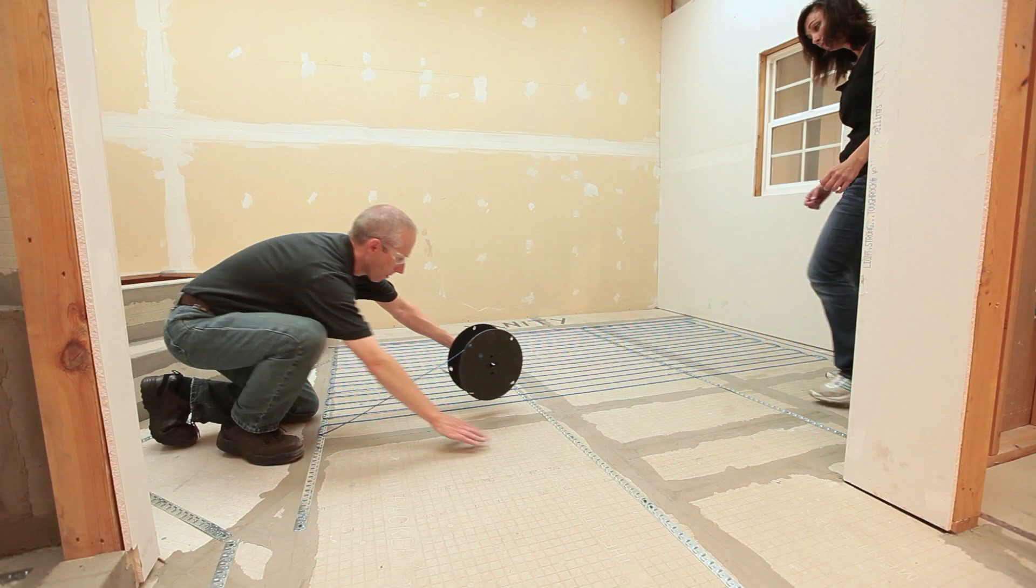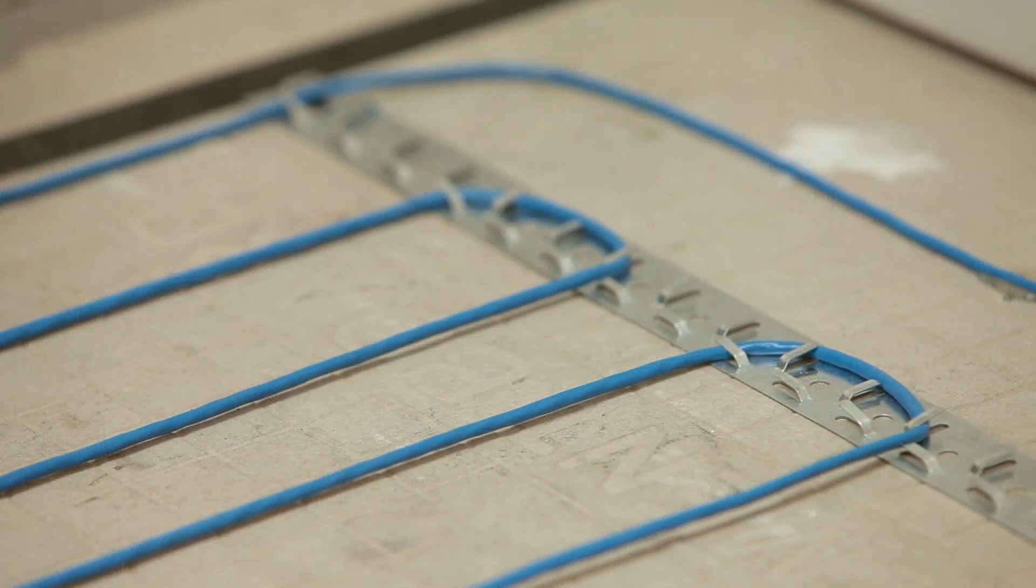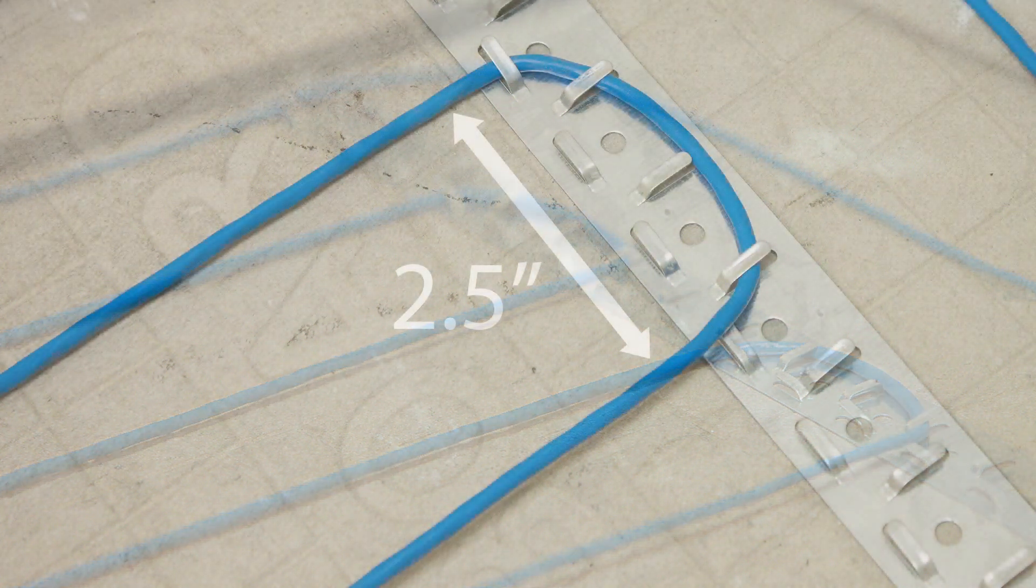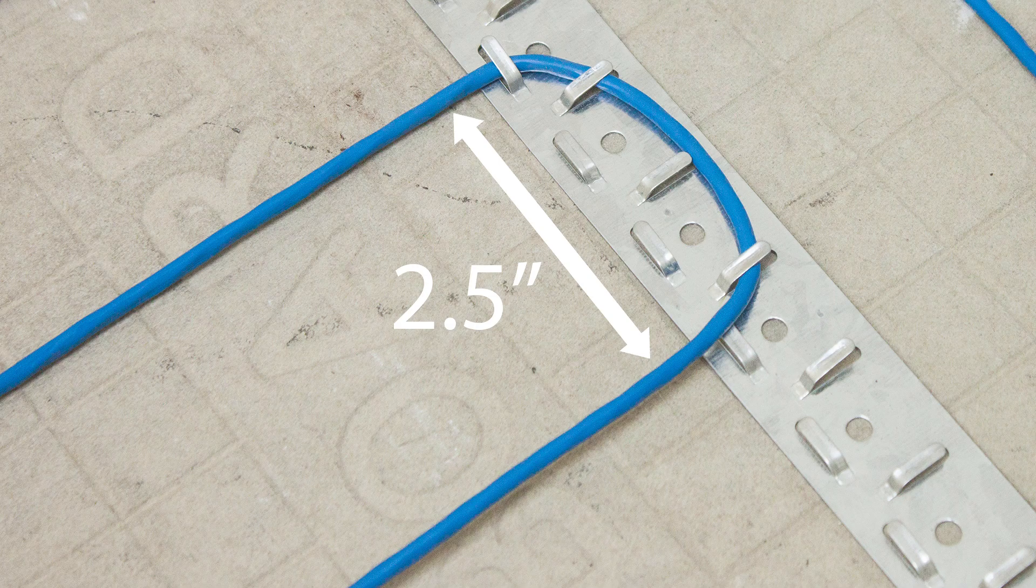Feed the heating wire between one row of strapping and the other, keeping in mind your desired spacing. Each vertical tab is a visual indicator of one inch spacing. For two and a half inch spacing, wrap the wire around three vertical tabs, plus one horizontal tab.